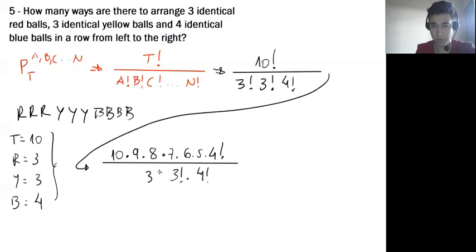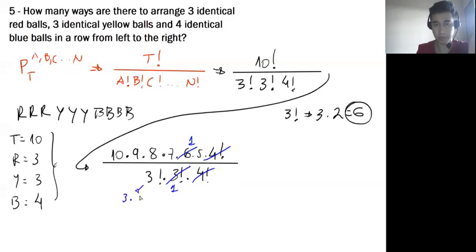Three factorial equals three times two, which is six. We can simplify this with the numerator. Four factorial cancels with four factorial. Three factorial can be written as three times two. Ten divided by two is five. Nine divided by three is three.